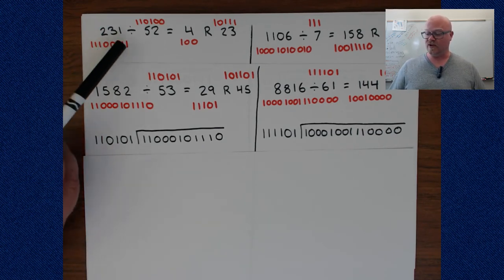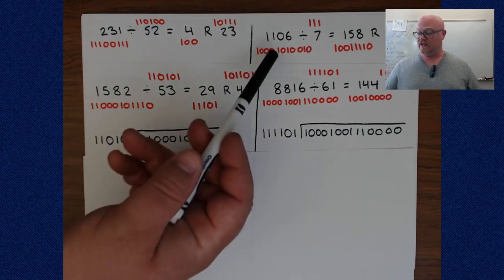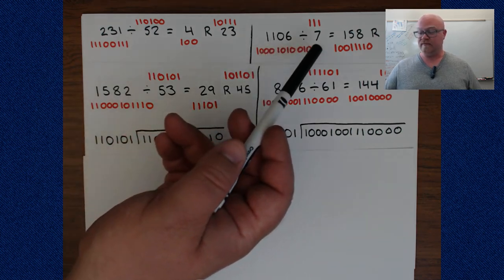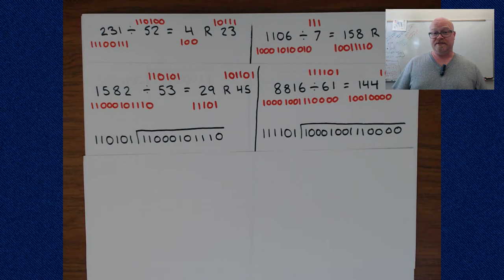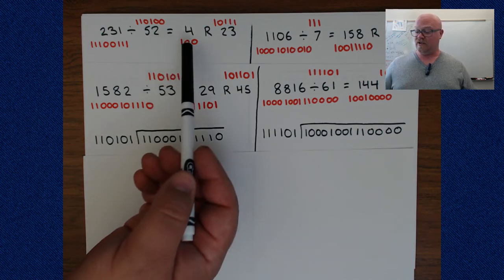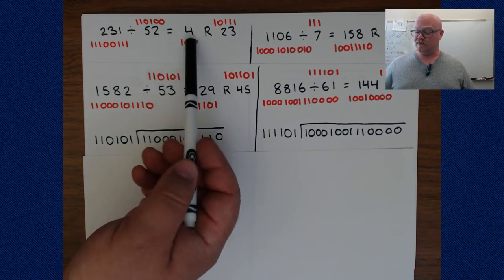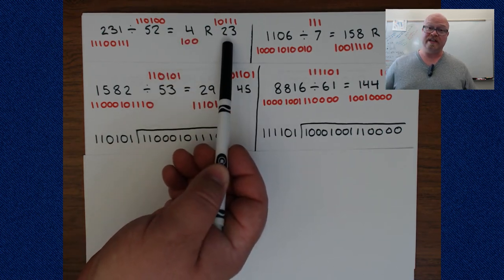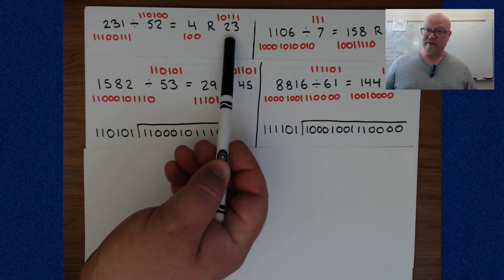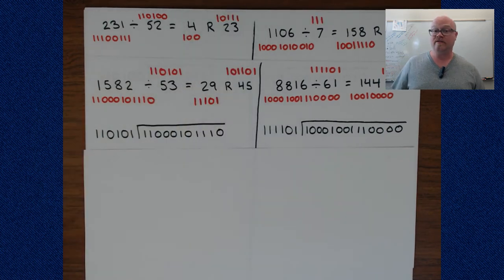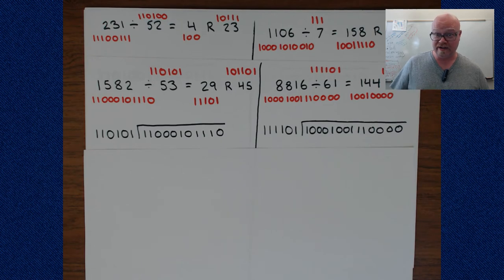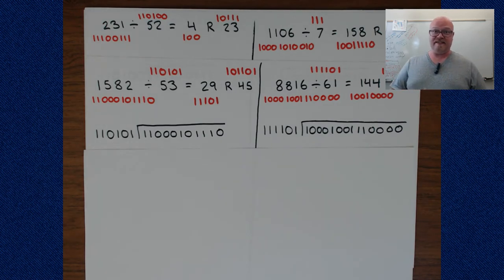You can see the 231 divided by 52, the 1,106 divided by 7 — all of those are from that random.org page. What I've done on these sheets of paper is I've ahead of time calculated out what the quotient and remainder will be in decimal, and then what the binary equivalent is for the dividend, divisor, quotient, and remainder. So we don't have to watch that being calculated in this video.